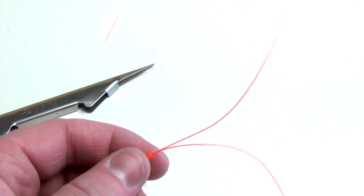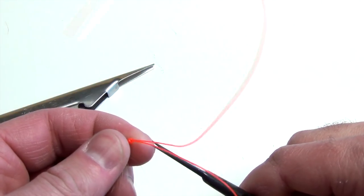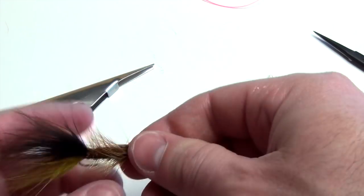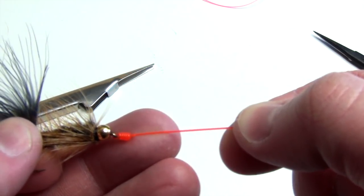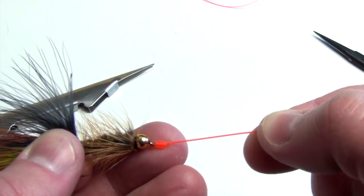Then all you have to do is trim off the tag end, and you've got a nice clean barrel knot that has tied your fly on.